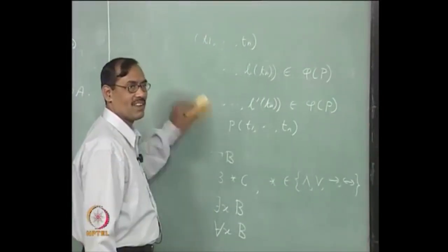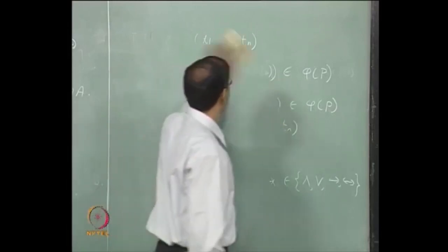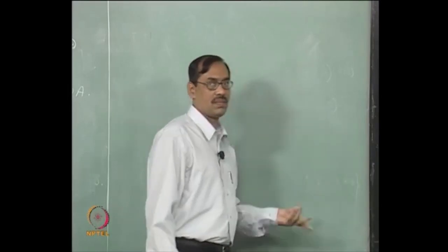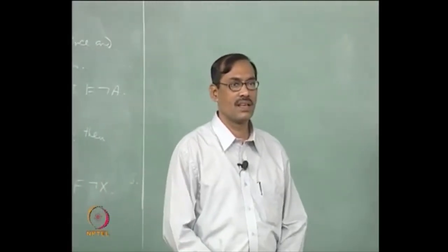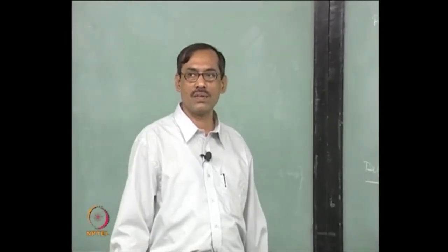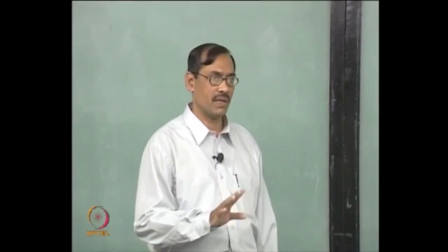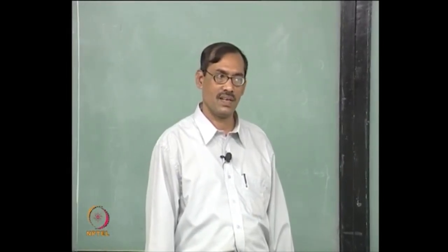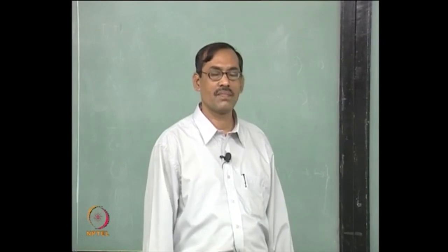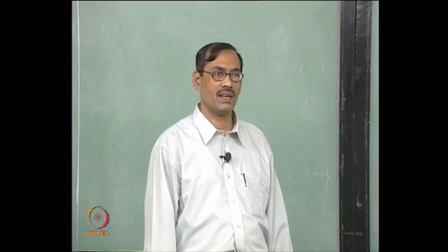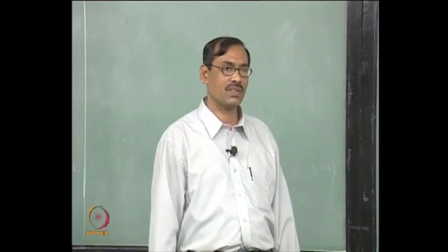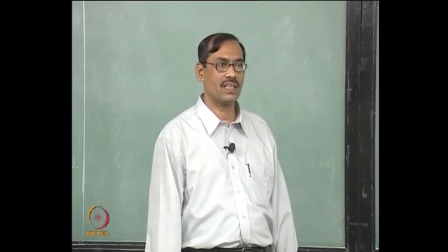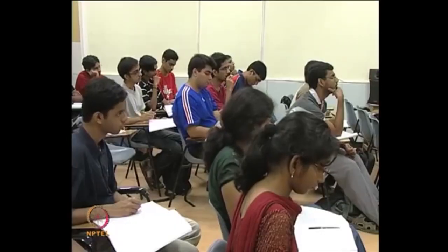To show that an interpretation cannot directly interpret an open formula, we need an example. We must consider an open formula with at least one free variable, say P(x) where x is the only free variable. Can we construct an interpretation that neither satisfies P(x) nor satisfies not P(x)?